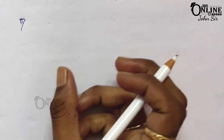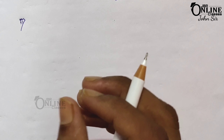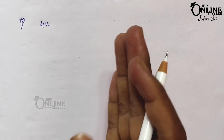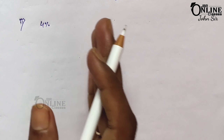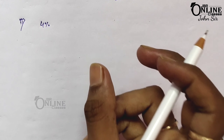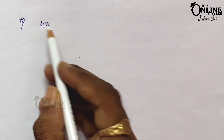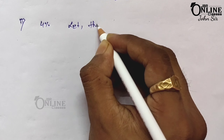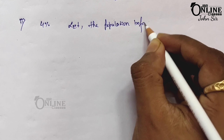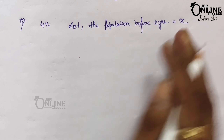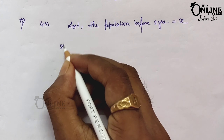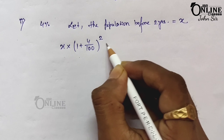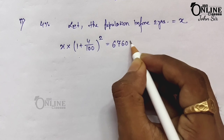Now, find the population two years ago. Remember, the given rate is an increase rate — 4 percent is the increase rate. You cannot use the formula with (1 − 4/100) because 4 is not a decrease rate. So let the population before two years equal x. Then x into (1 + 4/100) squared equals the present population.